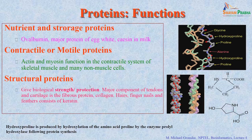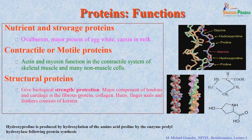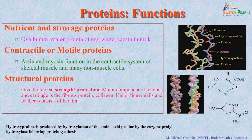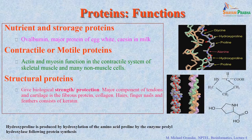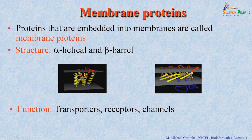There are also important structural proteins, also called contractile or motile proteins. For example, actin and myosin function in the contractile system of skeletal muscle. Structural proteins give strength and protection — for example, keratin, a fibrous protein, and collagen, which you can find in hair, fingernails, and feathers. These proteins have a specific combination of amino acid residues: hydroxyproline, glycine, and proline, making up about one-third of the composition, giving them an elongated shape.